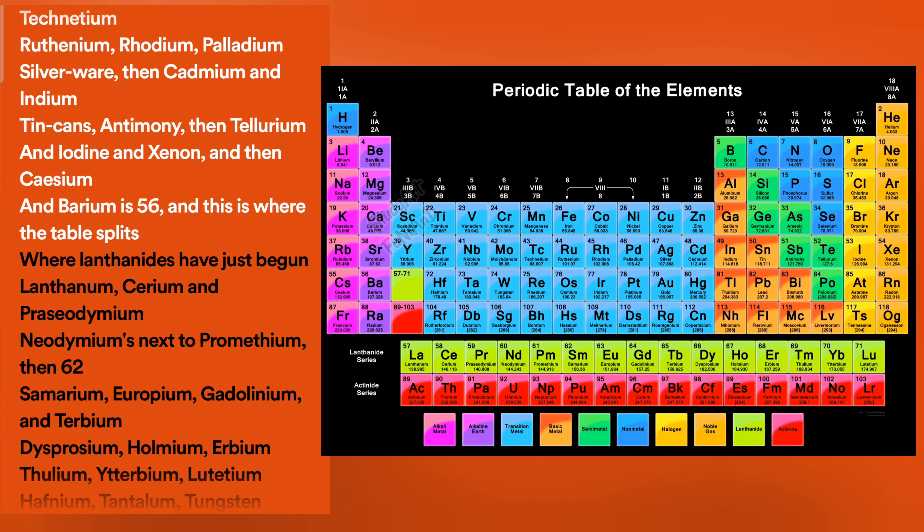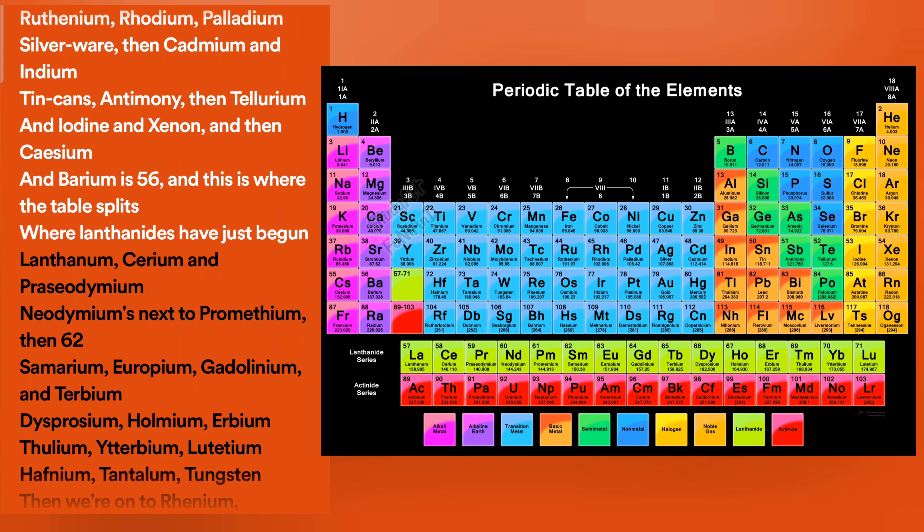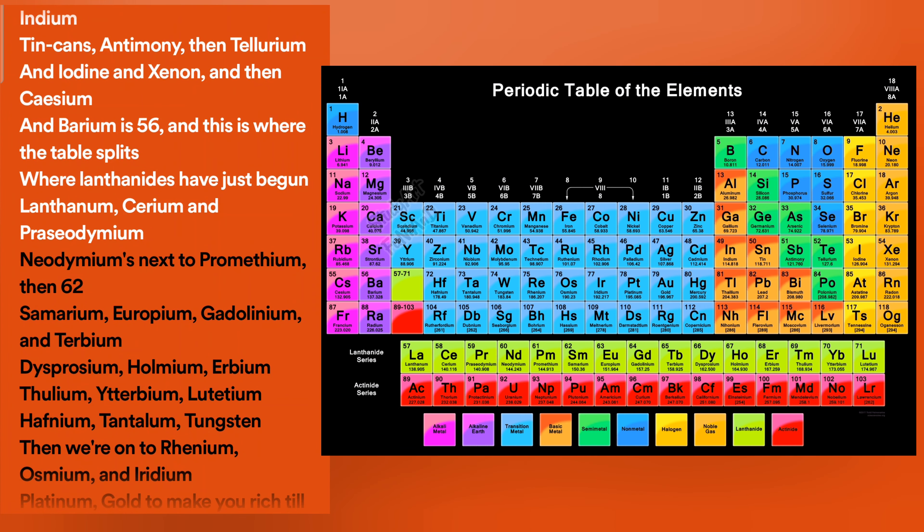Barium is 56, and this is where the table splits, where lanthanides have just begun. Lanthanum, cerium, and praseodymium.